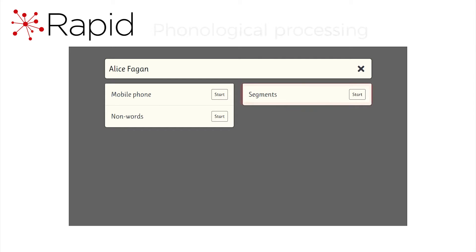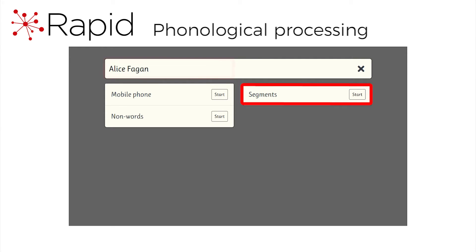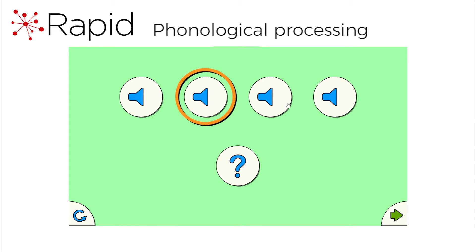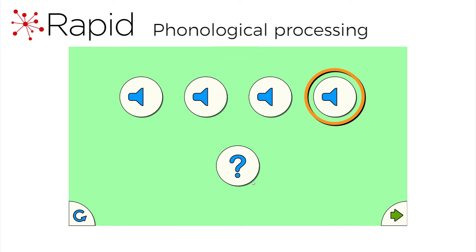Finally, let's take a quick look at the test of phonological processing. This student is 14 years old, so she will see segments. This test chops up words. Here's an example: Doorway. If we cut the door out of doorway, what would be left? Choose the speaker which says the right answer, then use the arrow to move on. Doorway without door is... way. Yes, that's right.